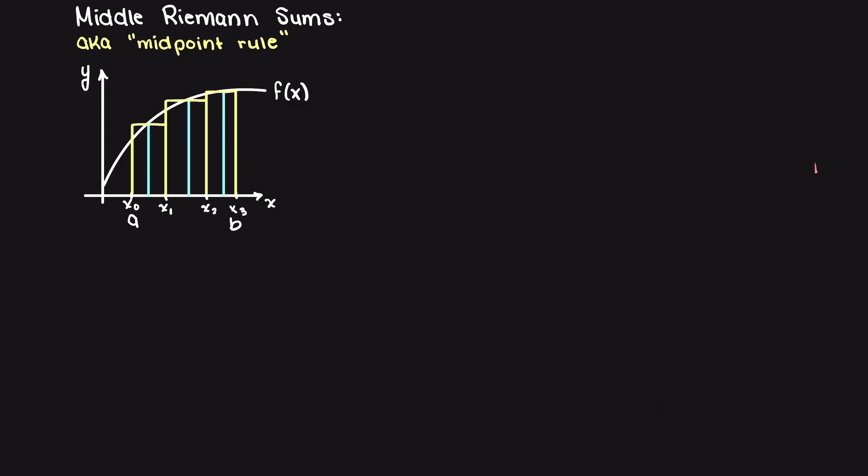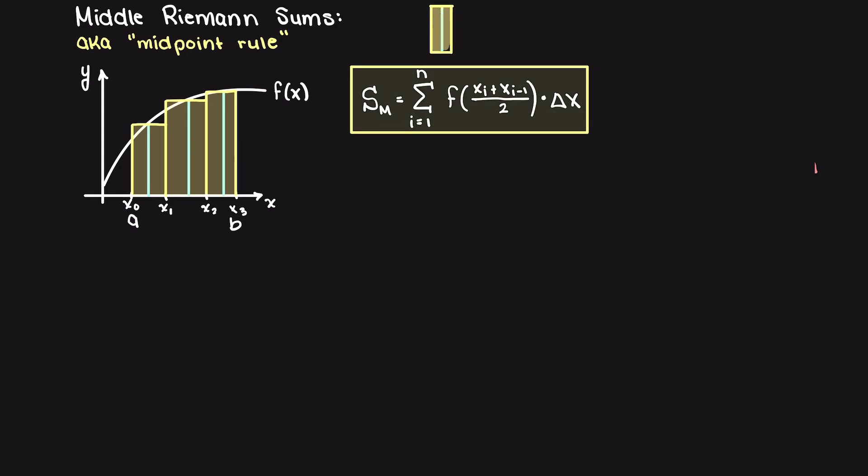Here, our area of each rectangle will be found by multiplying our base just like we did for the other two methods, and this will be multiplied by the output of the middle of a rectangle, hence the name midpoint rule.